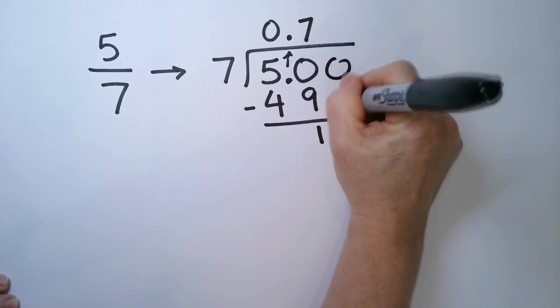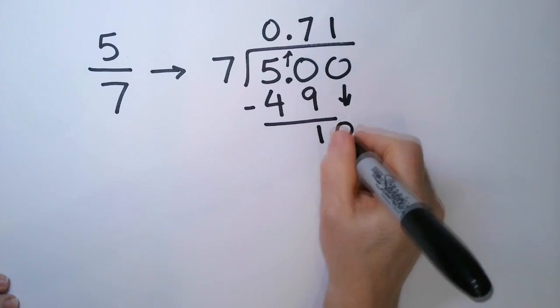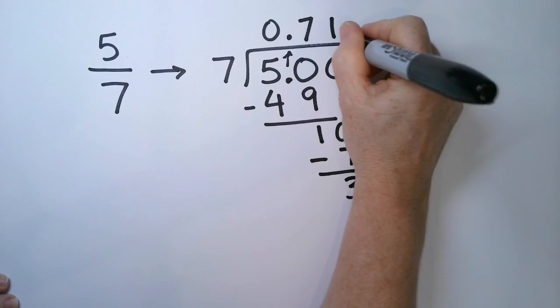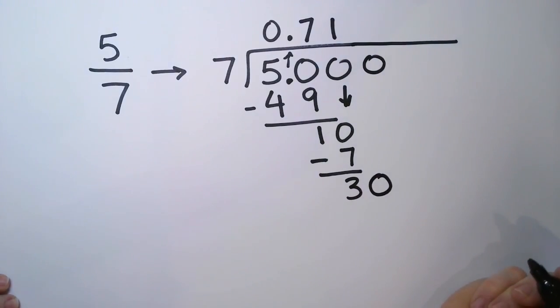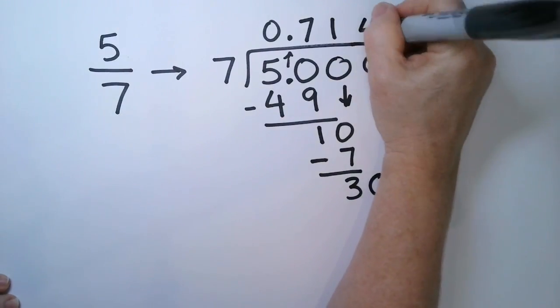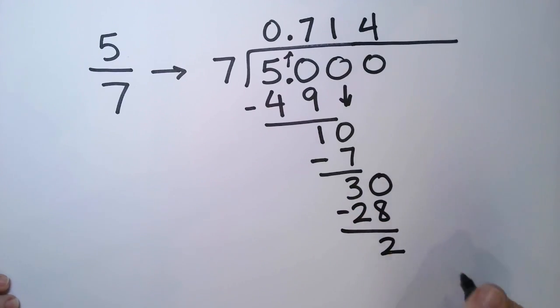And then we're going to drop another 0 down. And then I have a 1 because 7 goes into 10 one time, and I have a 3 left over. So we're going to extend this a little bit. And so this is a 0. So 7 goes into 30 four times. 4 times 7 is 28. A difference is 2.